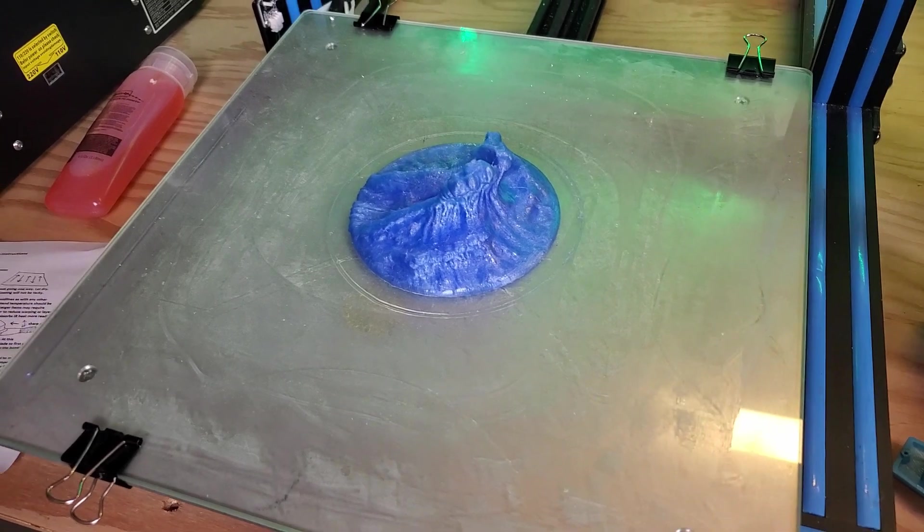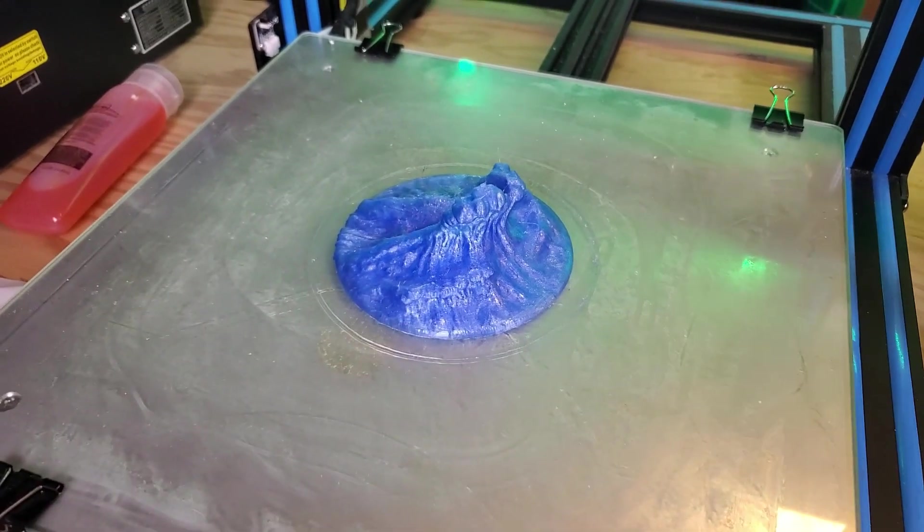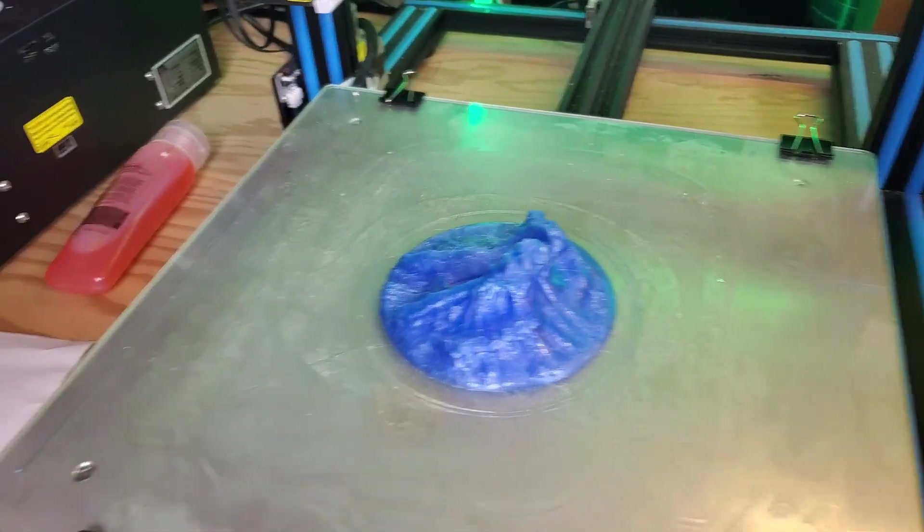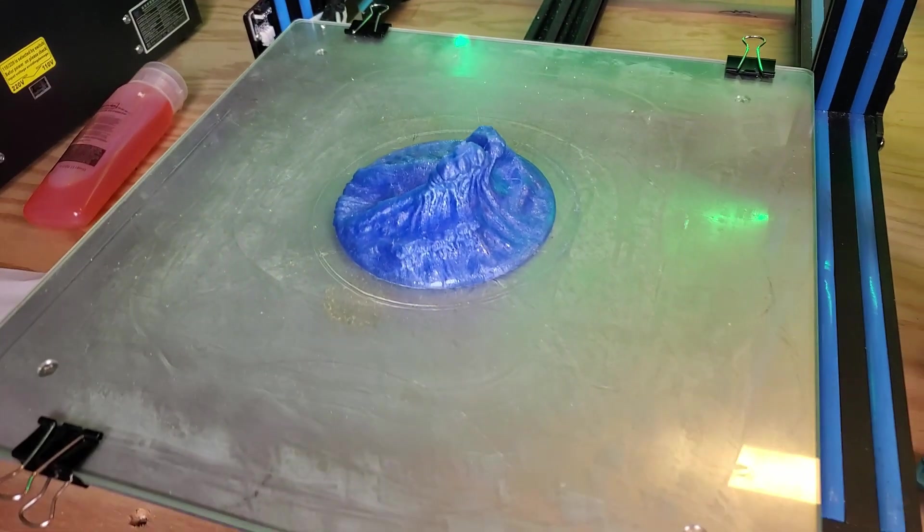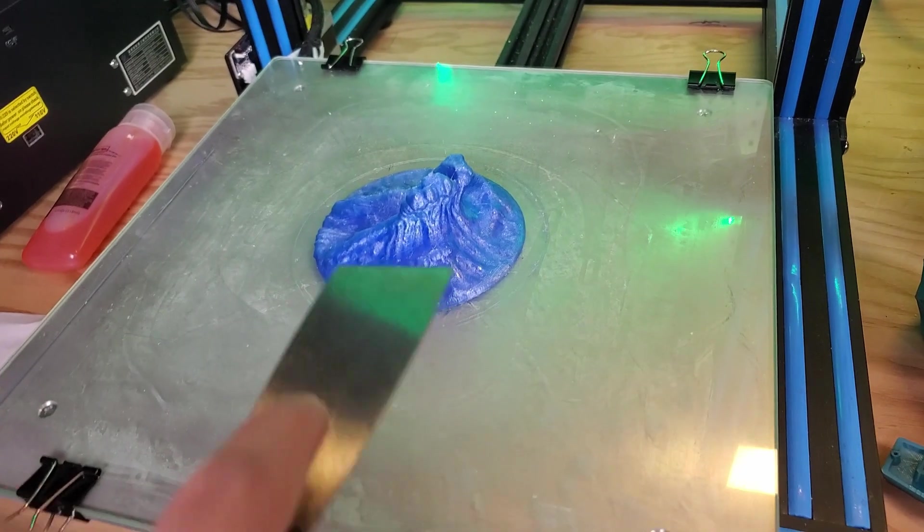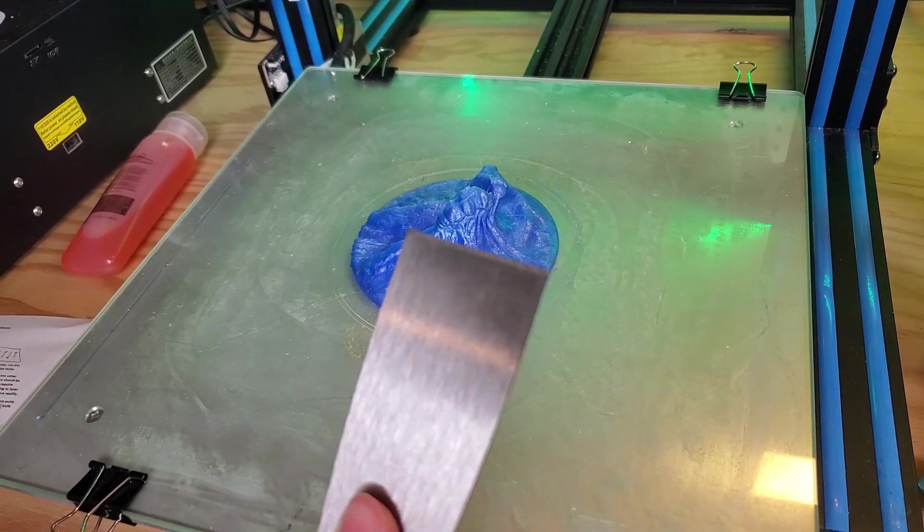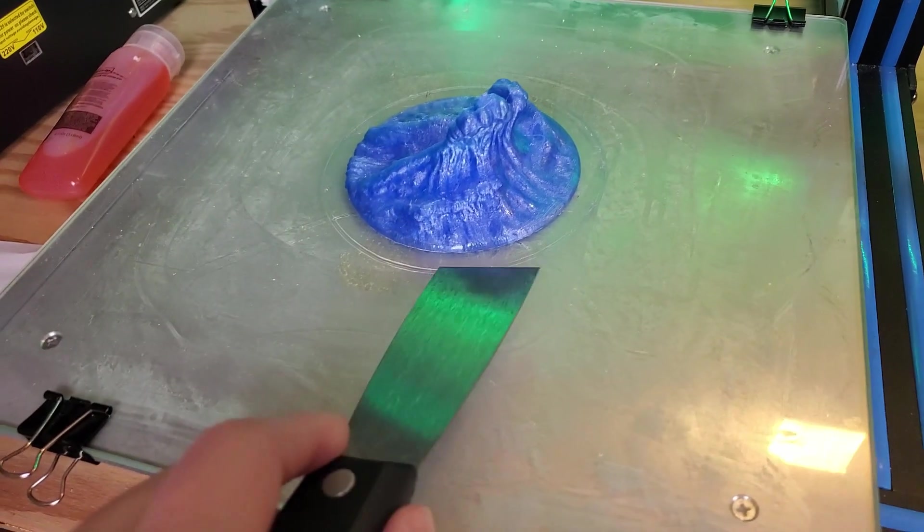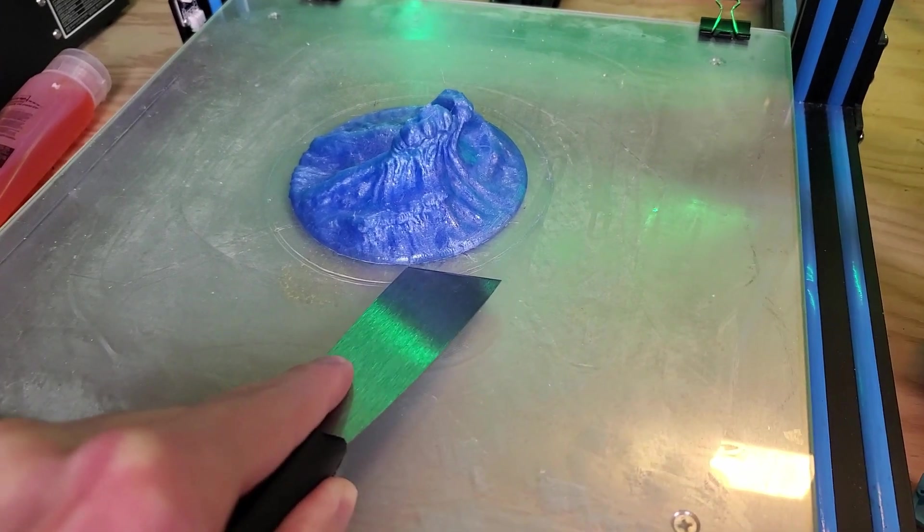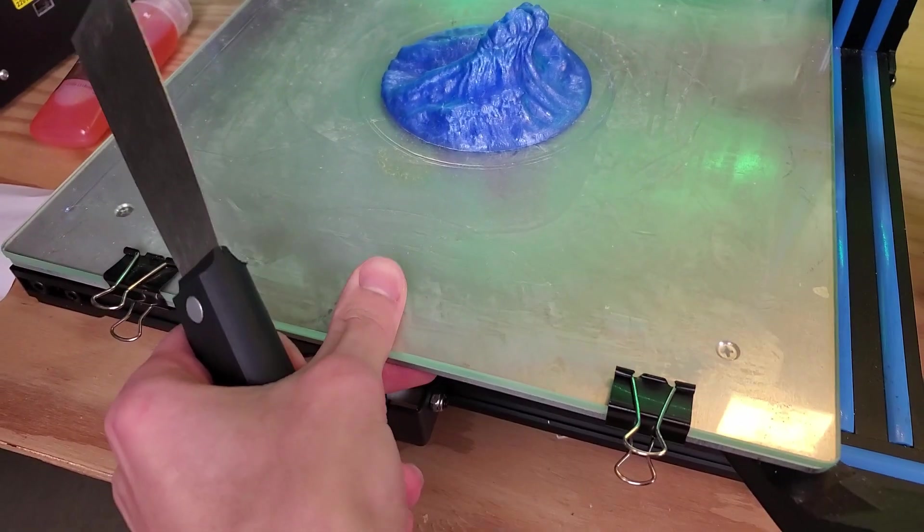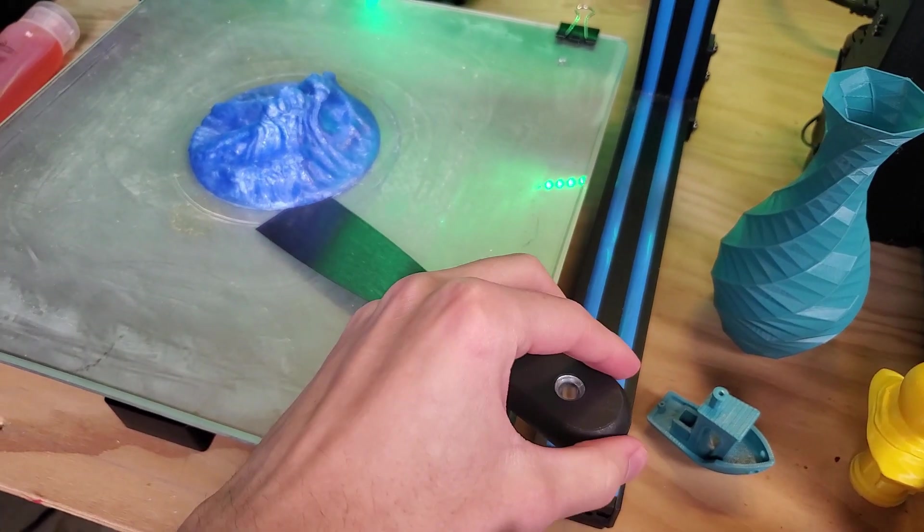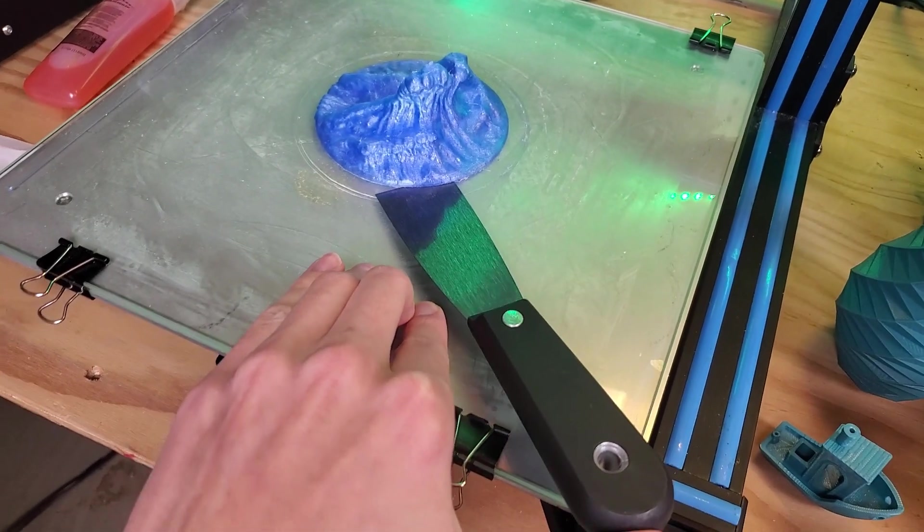We're back and the directions say to heat the bed up to 80 to 90°C. Right now I'm about 75°C, so I'm almost there. I have my spatula here which will hopefully help get underneath and pop the part off. It does have a little bit of a beveled edge so I can try to get under there. The bed is pretty hot now, I can feel it with my hands, pretty hot to touch.